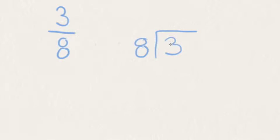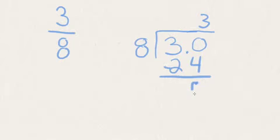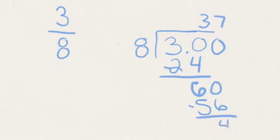8 will not go into 3 right off the bat, so we'll add a decimal and add a zero. 8 will go into 30 three times. 3 times 8 is 24. And we subtract and end up with 6.